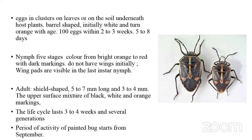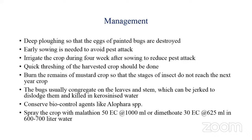The adult bug is typically shield-shaped, five to seven mm long and three to four mm broad. The upper surface has a mixture of black, white, and orange markings — this gives the insect its common name 'painted bug'. The life cycle lasts about three to four weeks. The pest is multivoltine and its period of activity is during September.